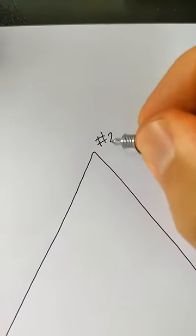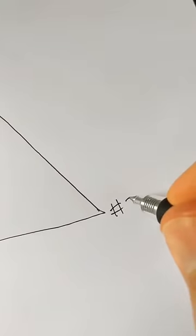On the bottom left-hand corner, draw number one. On the top corner, write number two, and on the bottom right-hand corner, write number three.